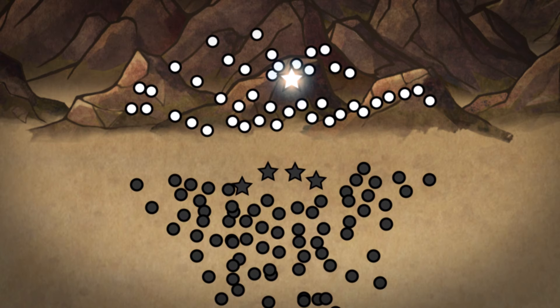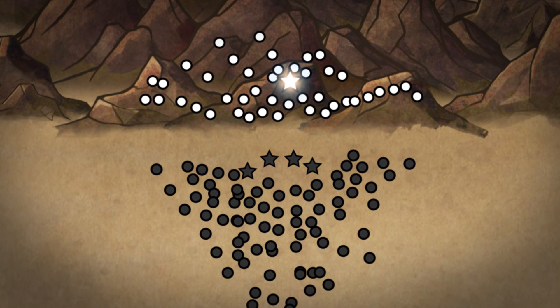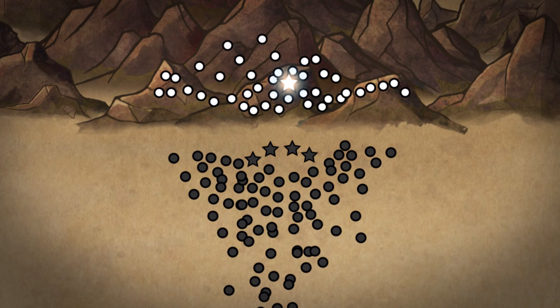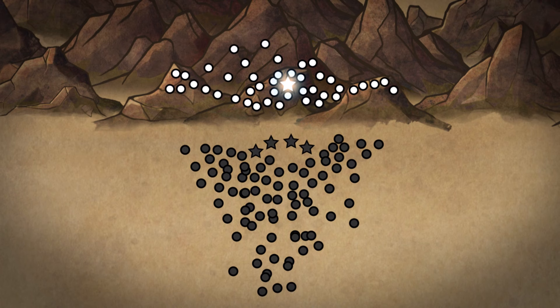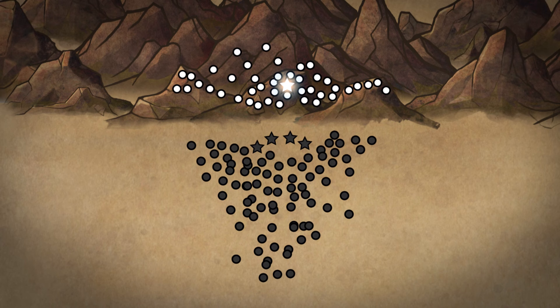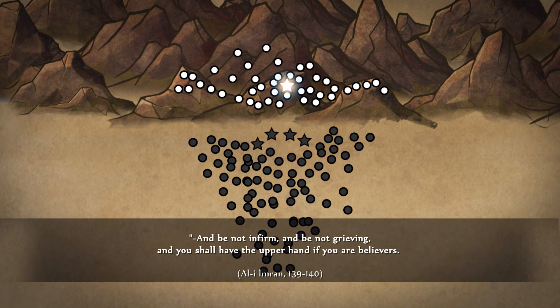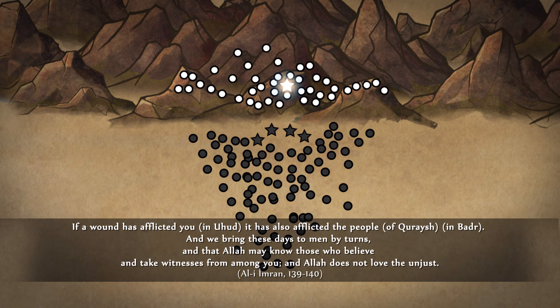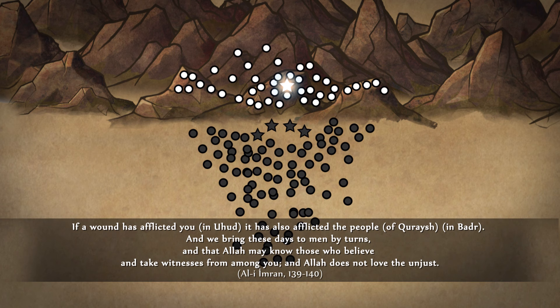On that terrible day, despite everything, the messenger of Allah never left his place like a pole star and resisted with great skill. With his courage and perseverance, he set a superior example to his companions in courage, because the Almighty said: And be not infirm, and be not grieving, and you shall have the upper hand if you are believers. If a wound has afflicted you, it has also afflicted the people. And we bring these days to men by turns, and that Allah may know those who believe and take witnesses from among you. And Allah doesn't love the unjust.